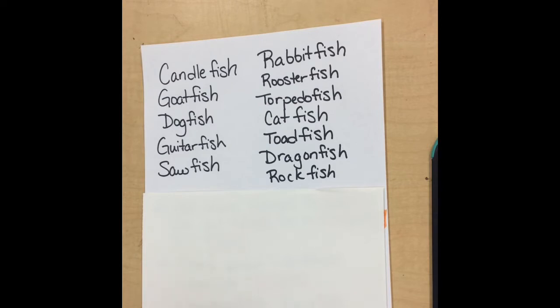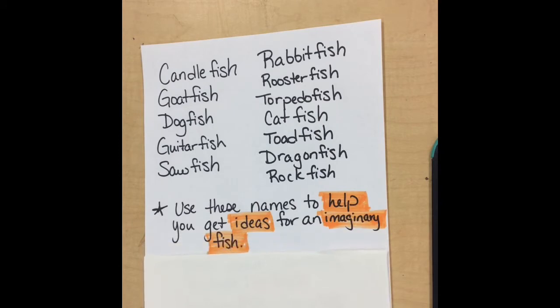These are all real types of fish. So we're going to use this list as a jumping-off place, a starting place for us to come up with some ideas for an imaginary fish. So it could be any kind of combination of an idea and the word fish.